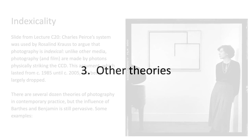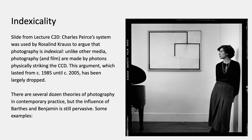Returning briefly to the previous lecture, Charles Peirce's system of indexical signs was used by the art historian Rosalind Krauss to argue that photography is indexical. Unlike other media, photography and film are made by photons that physically strike the CCD. This argument lasted — it was quoted and used from around 1985 to more or less 2005. You don't see it that much anymore, but it was influential at that time as a way of thinking about postmodern photography.